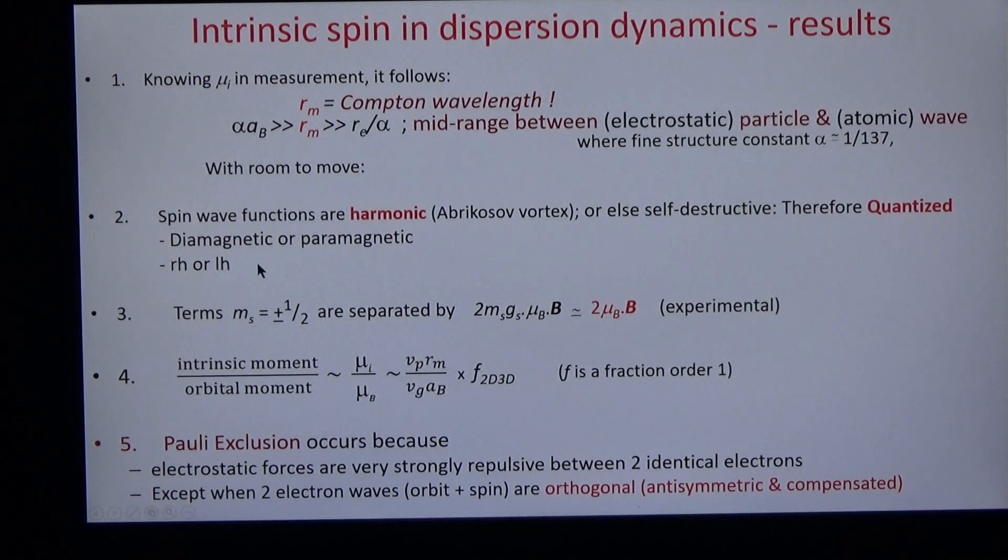And we can make four deductions. Knowing mu, we find that the magnetic radius is equal to the Compton wavelength. And the magnetic radius is 137 times smaller than the Bohr radius, the radius of a typical atom. And the magnetic radius is 137 times greater than the electrostatic radius of the electron, another type of particle.